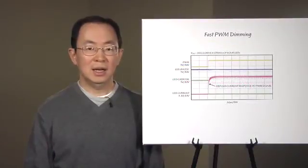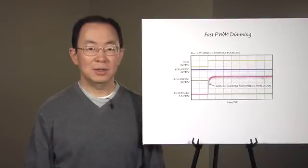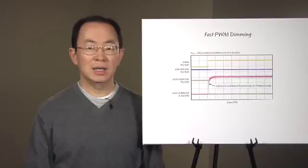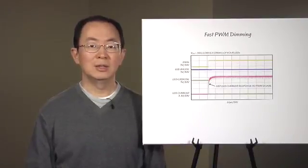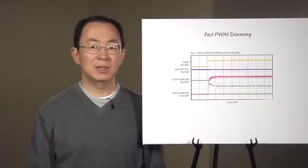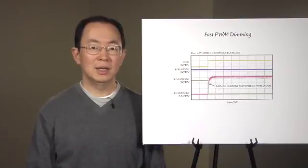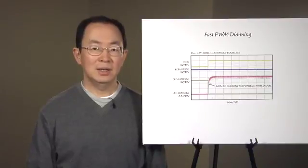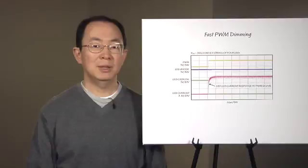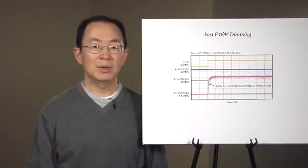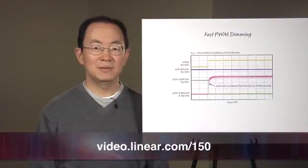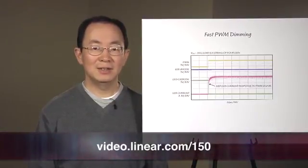Now you see that LT3763 is a unique solution for high voltage, high current LED drivers. The LT3763 has four regulation loops that make it very versatile and robust. An LT3763 circuit can be highly efficient. It can also deliver fast PWM dimming. If you have any questions, we will be more than happy to assist. Please visit us at Linear.com. Thank you.